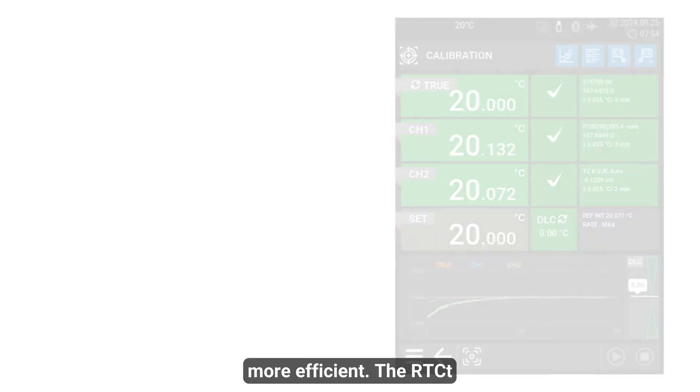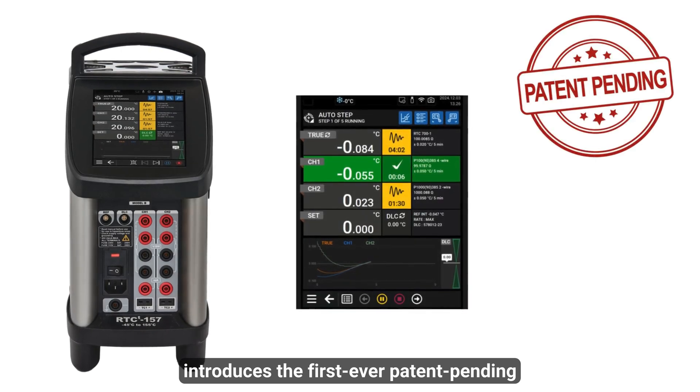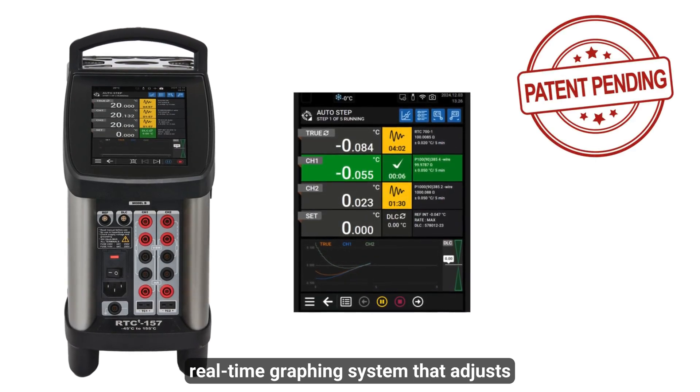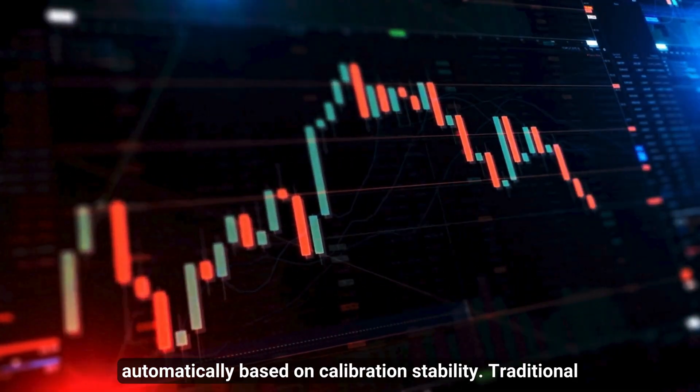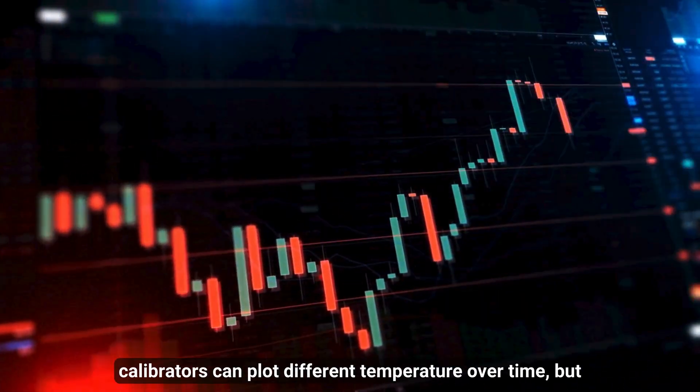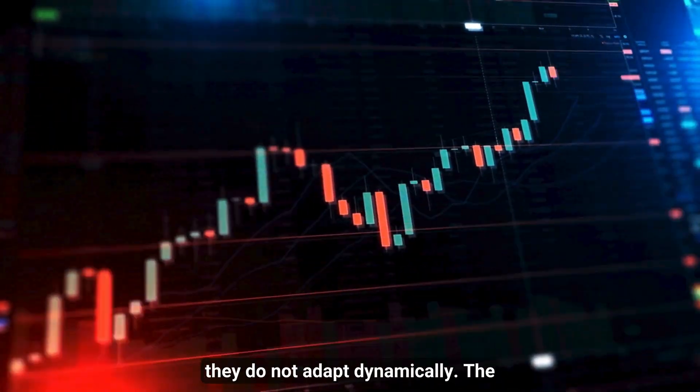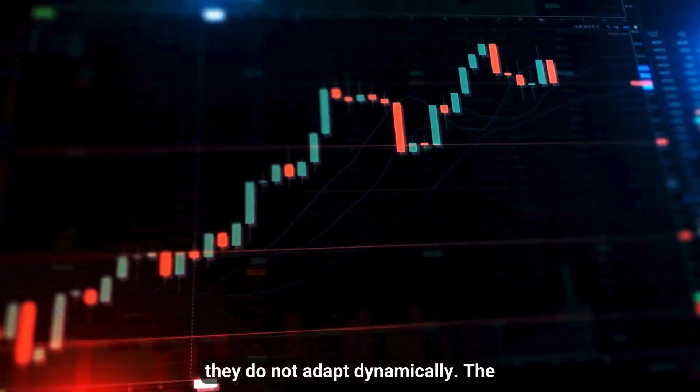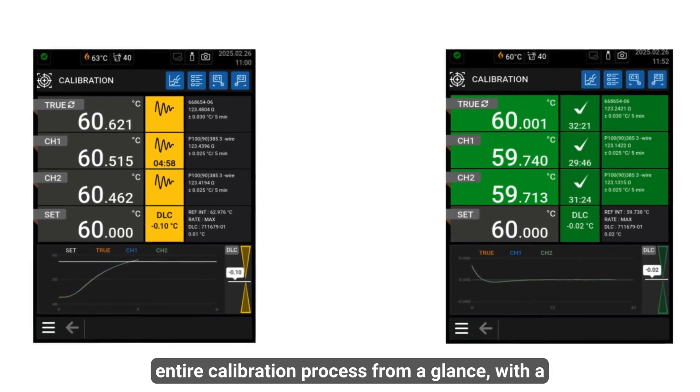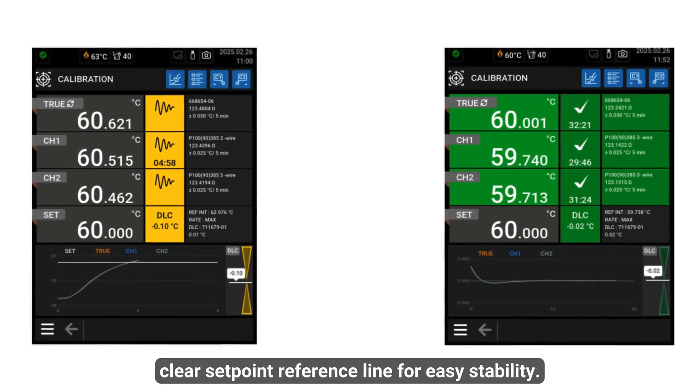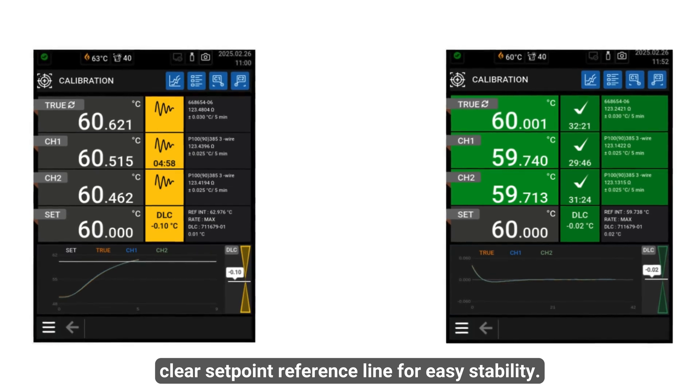The RTCT introduces the first-ever patent-pending real-time graphing system that adjusts automatically based on calibration stability. Traditional calibrators can plot temperature over time, but they do not adapt dynamically. The RTCT series allows you to see the entire calibration process at a glance, with a clear set point reference line for easy stability assessment.